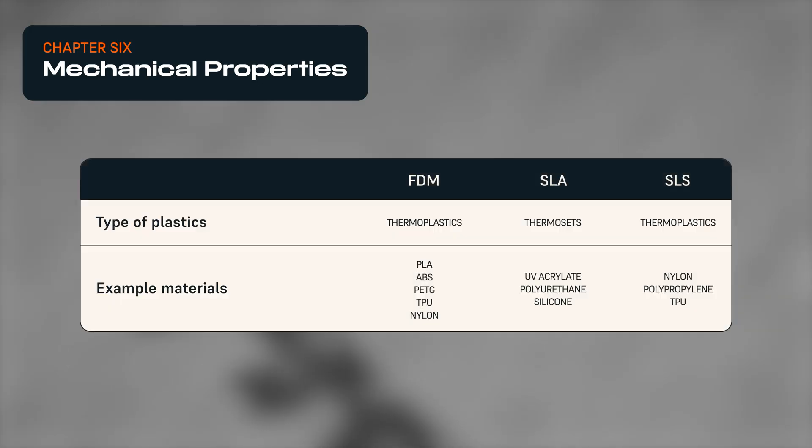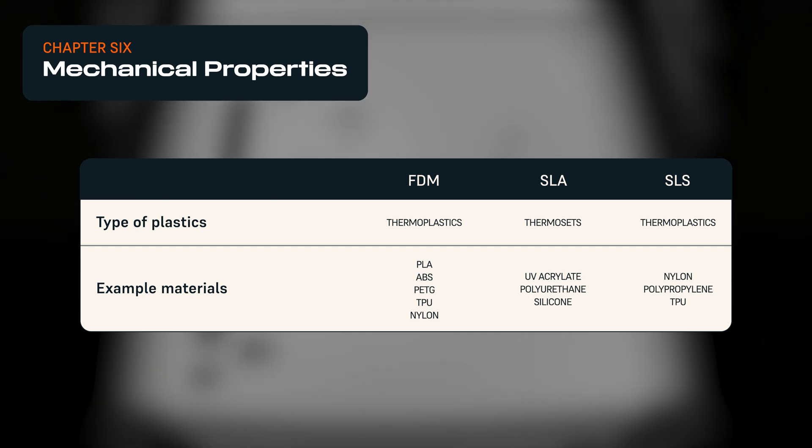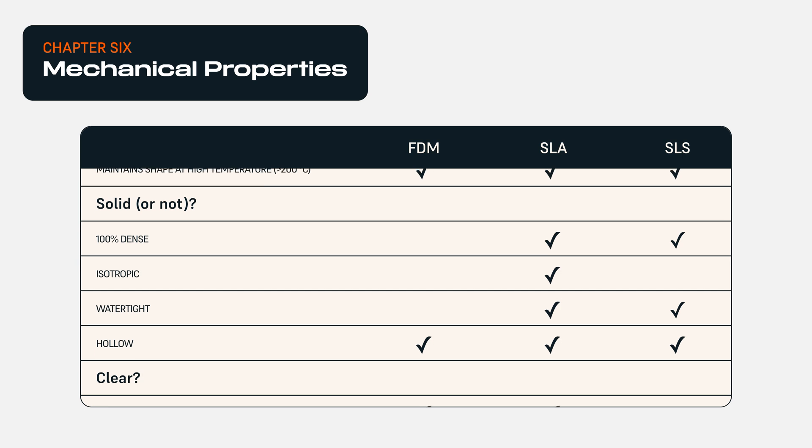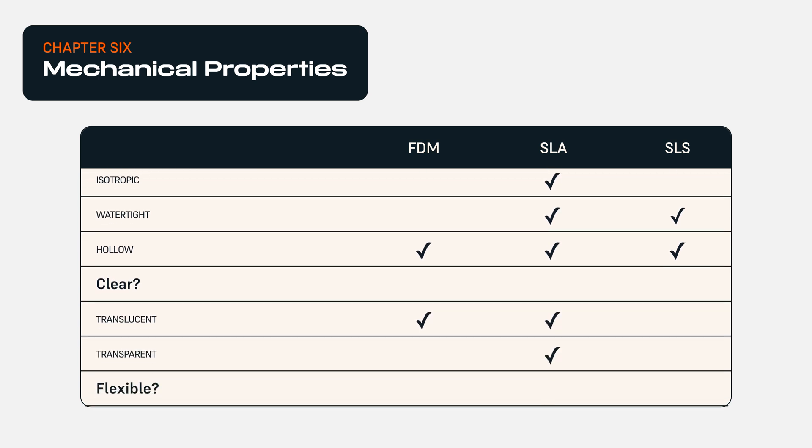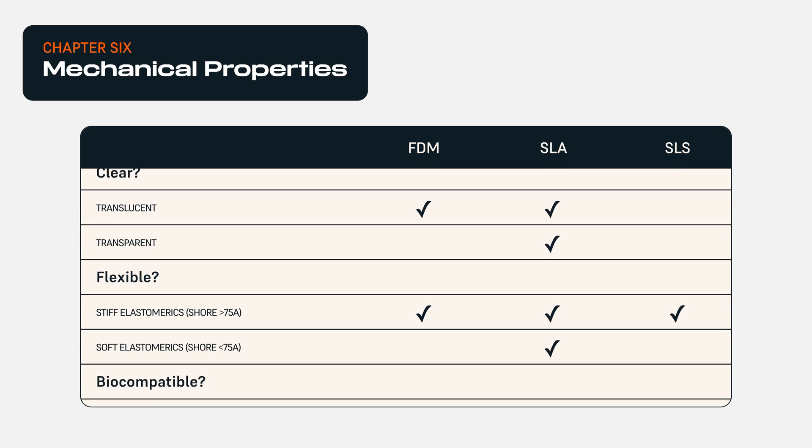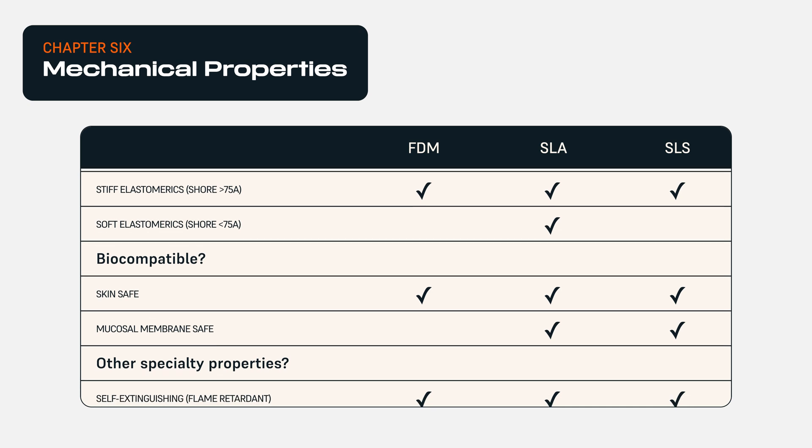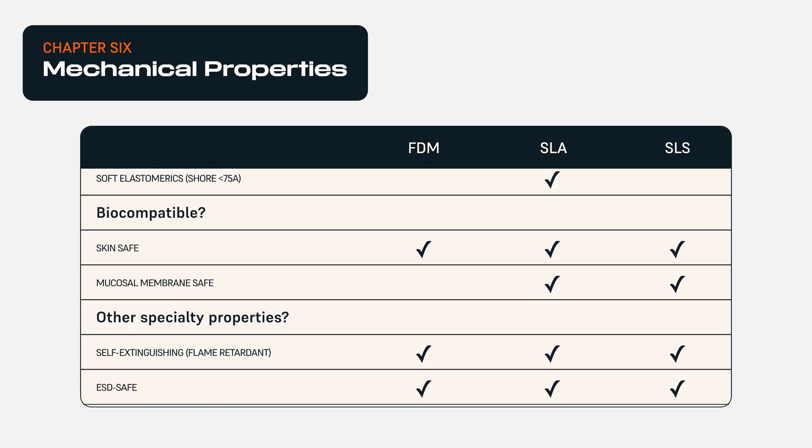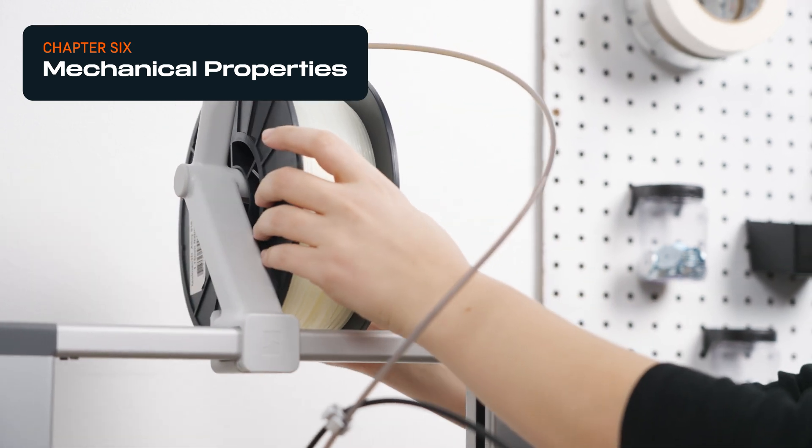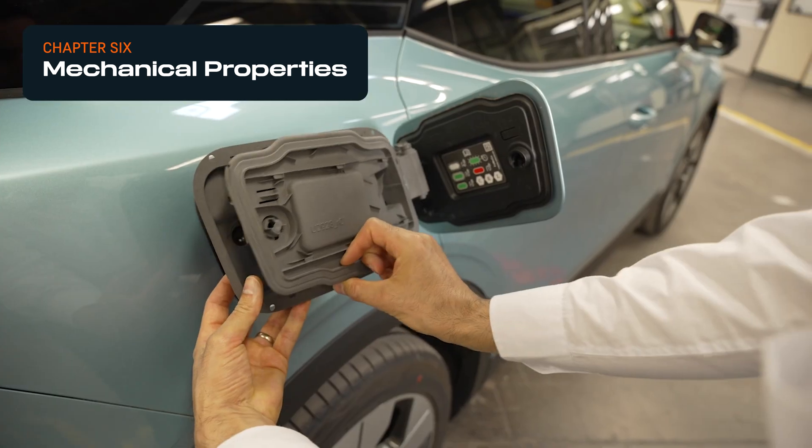As a rule of thumb, SLS produces the highest performance parts with excellent mechanical characteristics, strength, and durability resembling injection molded parts. SLA resin parts tend to become more brittle over time with UV exposure, but offer a wide range of materials for advanced applications including in-use parts. FDM offers a similar material range to SLS, but produces parts with overall inferior mechanical properties. Watch our video on comparing 3D printing materials to learn more.